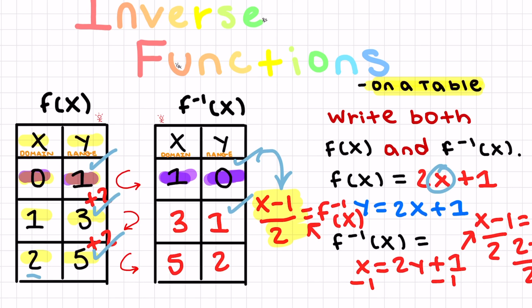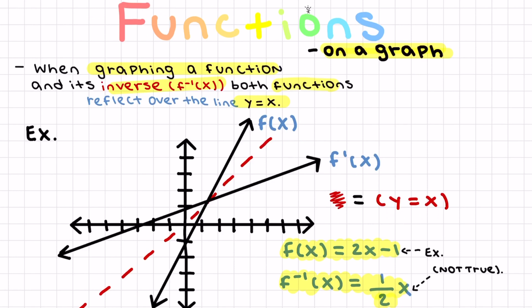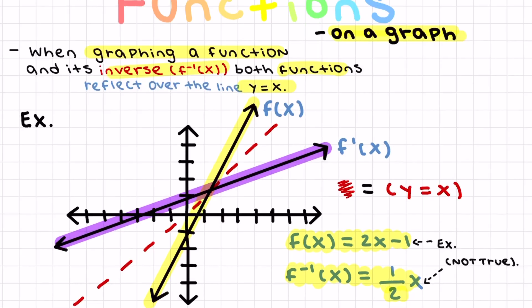Now let's look at inverse functions on a graph. When graphing a function and its inverse, both functions reflect over the line y = x. For example, if one line represents 2x - 1 and another line in purple represents (1/2)x, notice how they reflect over y = x. This is true for all inverse functions and their corresponding functions.